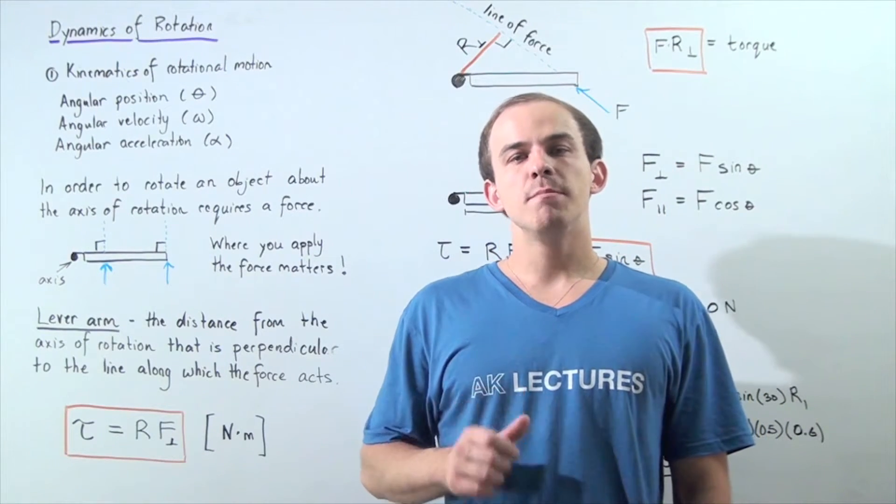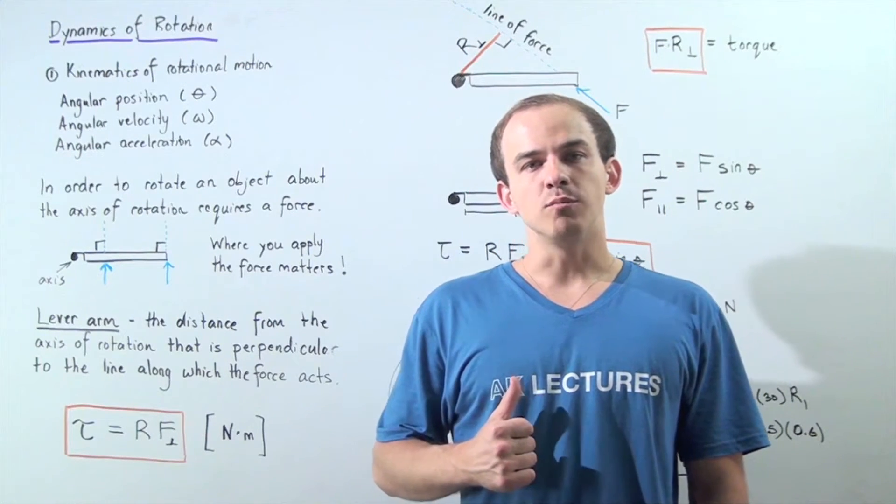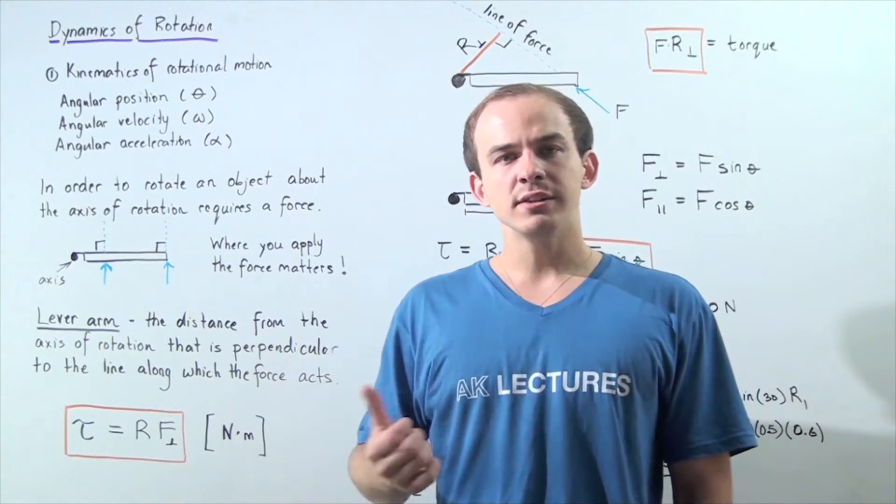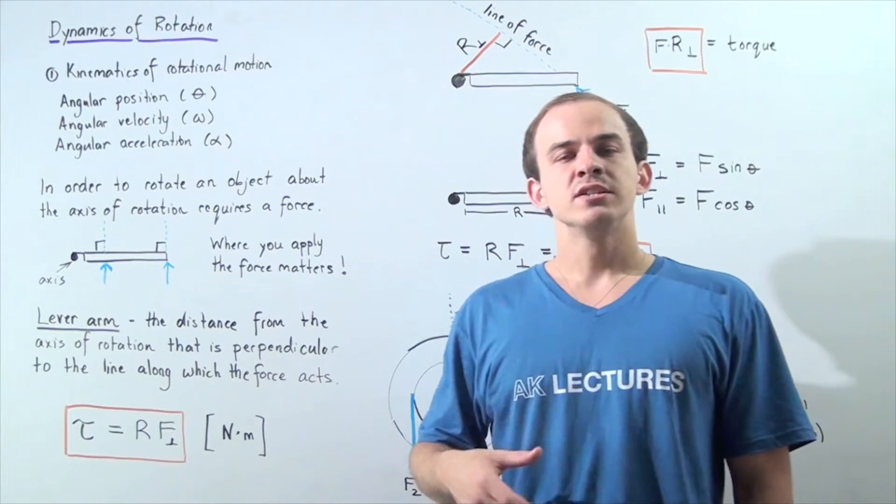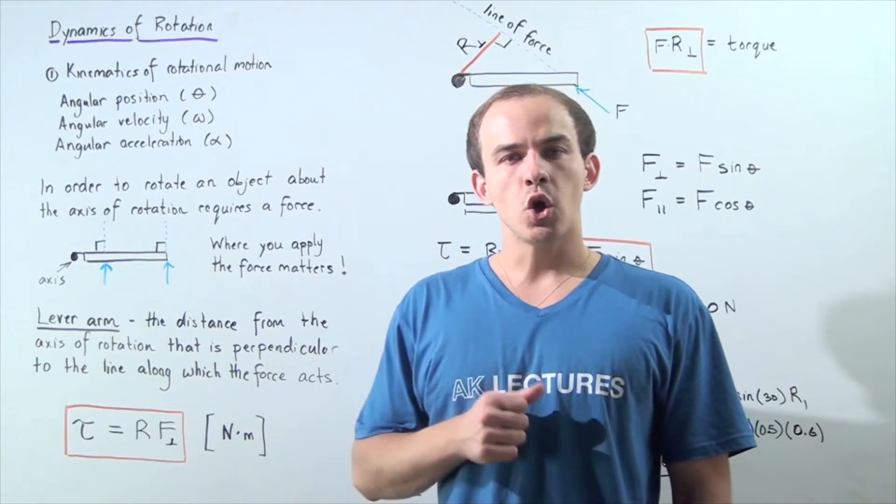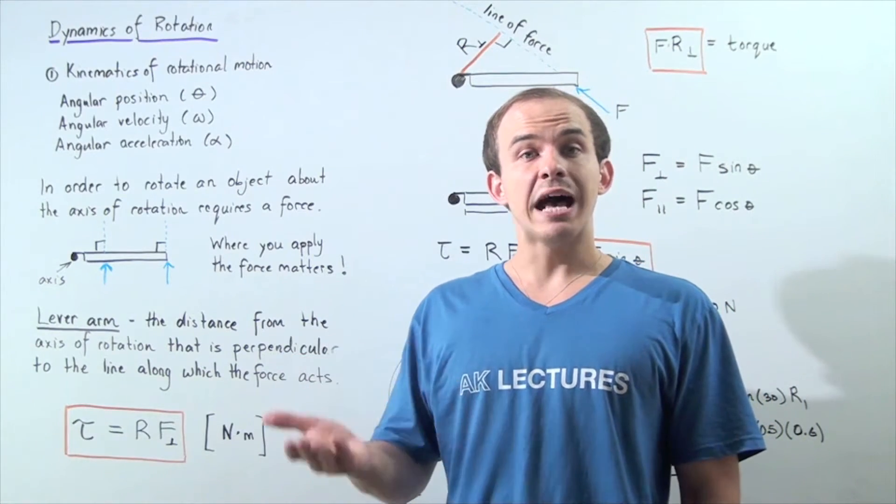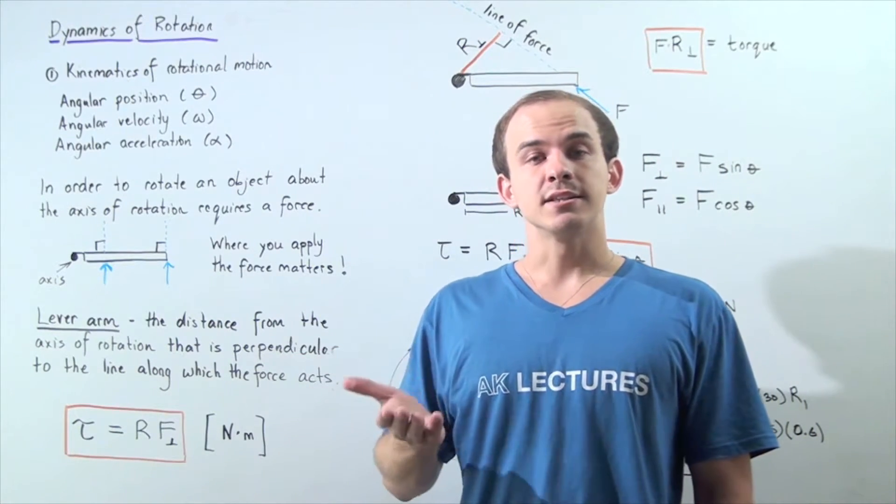As of now, we've only really spoke about the kinematics of angular motion and the different types of physical angular quantities that we can use to describe the way objects undergo angular or rotational motion. So we spoke about angular position, angular velocity, as well as angular acceleration.